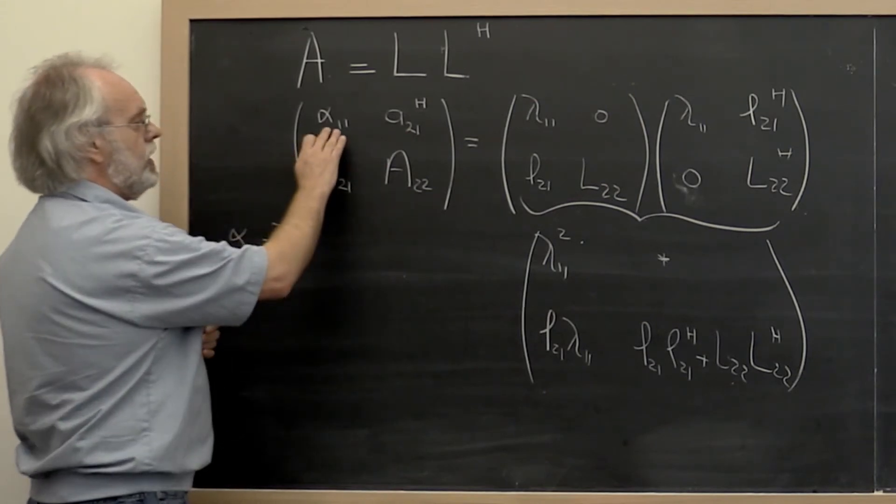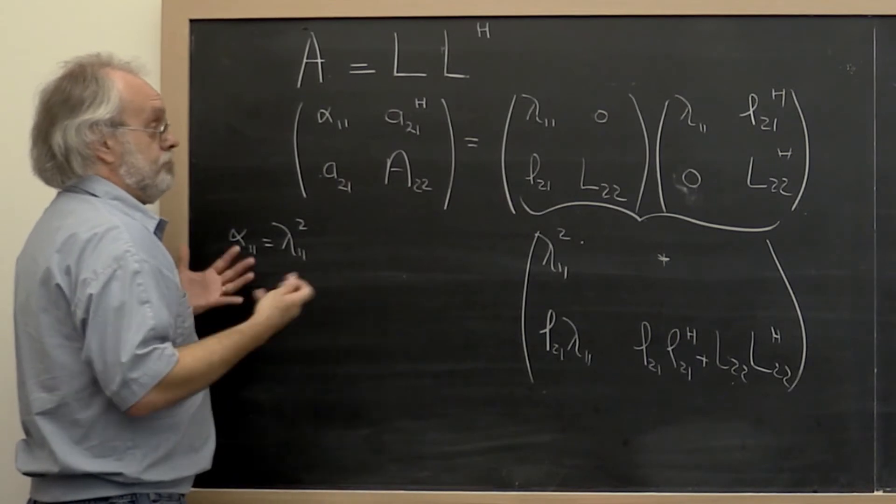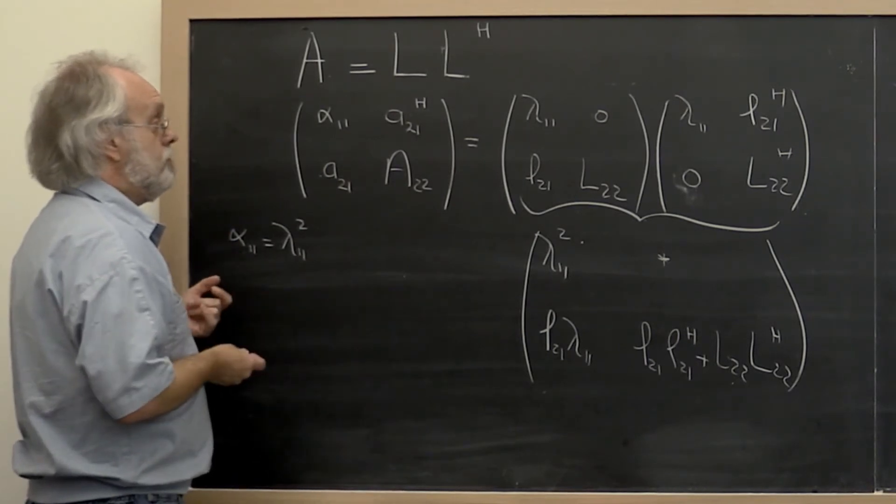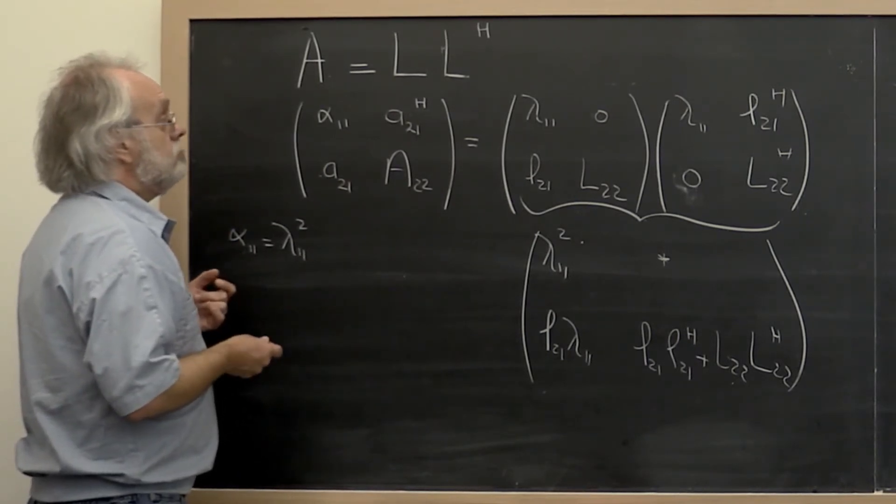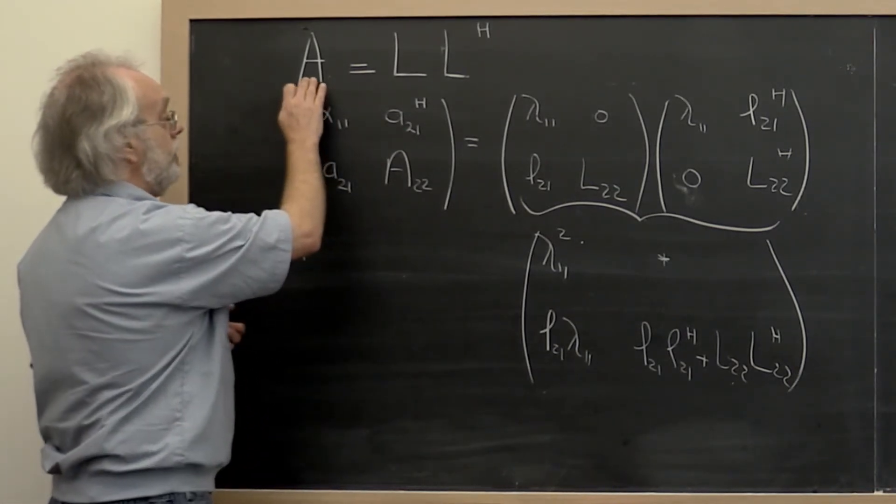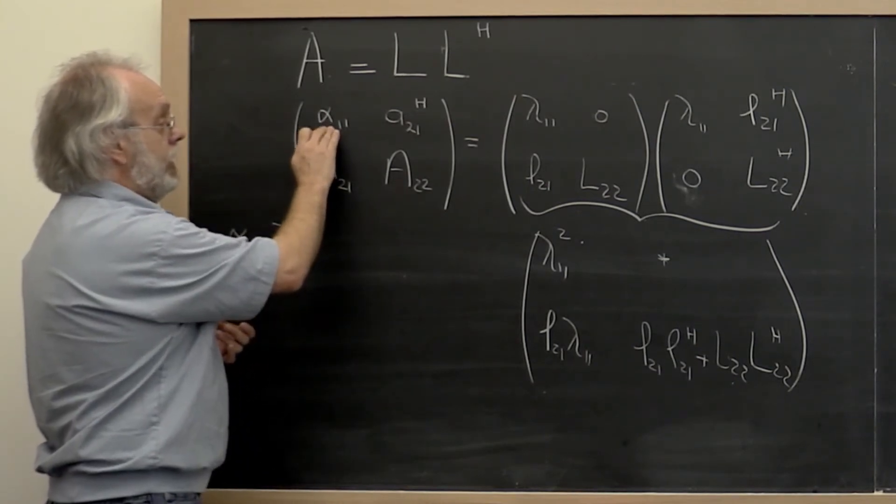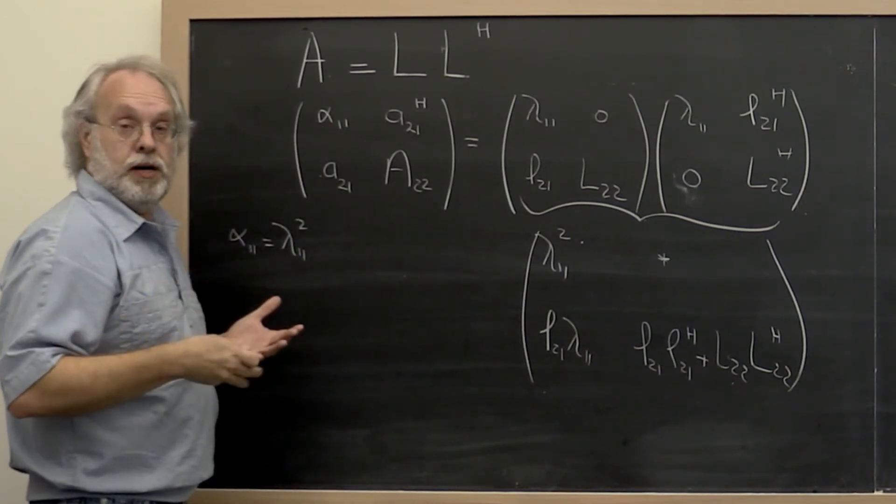In order to be able to do that, alpha_1,1 should be a non-negative value, real number. And in an exercise you're going to prove that if A is Hermitian positive definite, then alpha_1,1 is a positive real number.